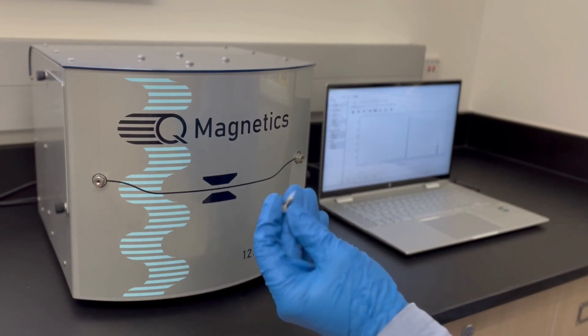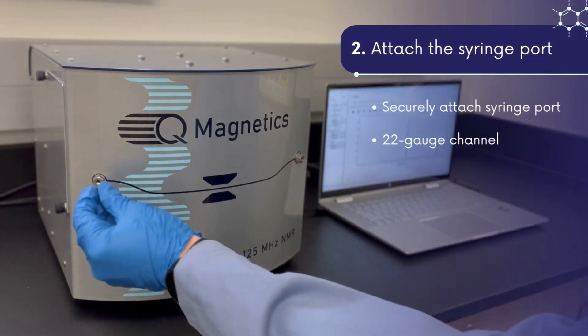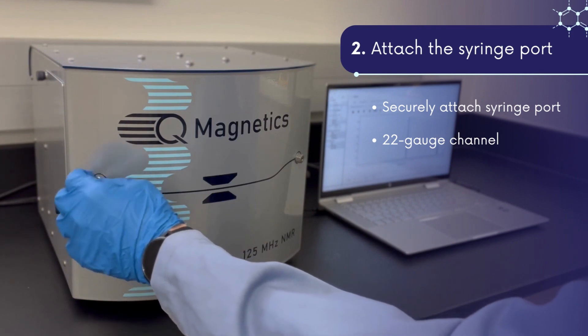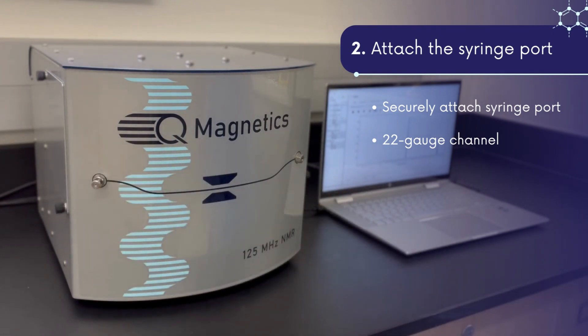Start by securing the stainless steel syringe port to either of the two front panel fittings. The syringe port is necessary to guide a 22 gauge needle when sample is ready to be loaded.